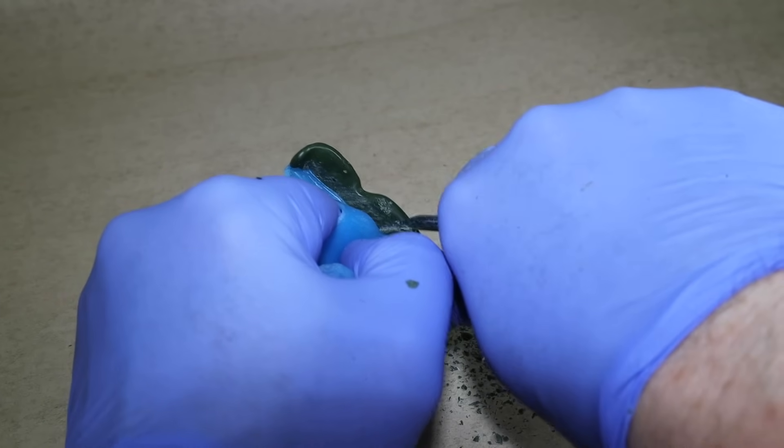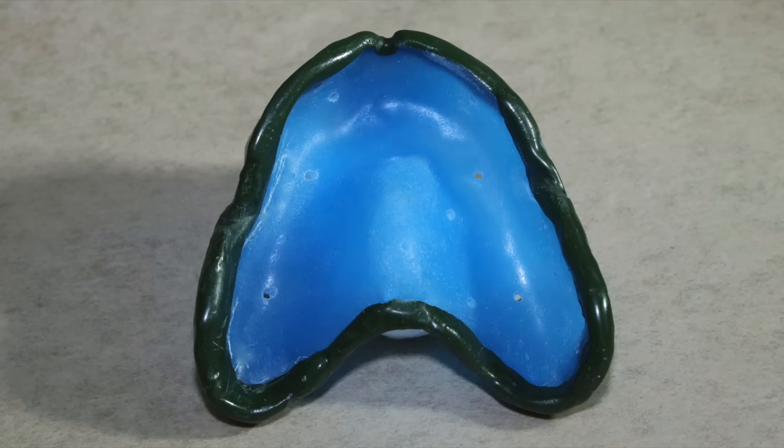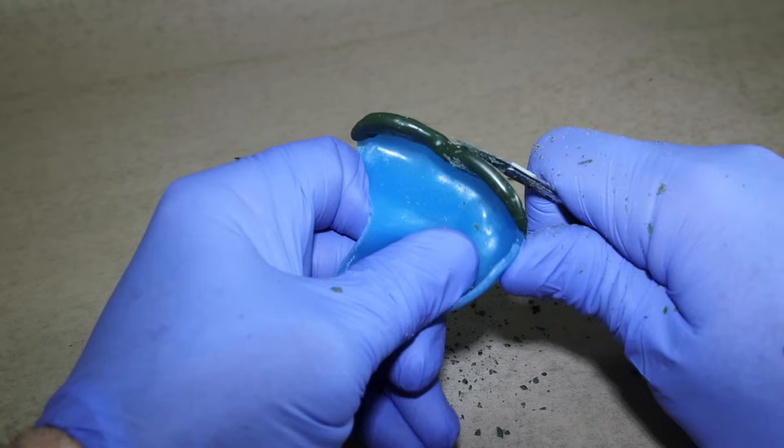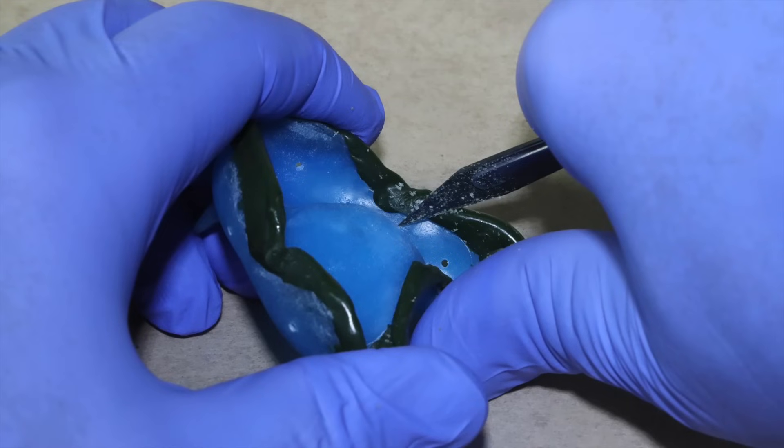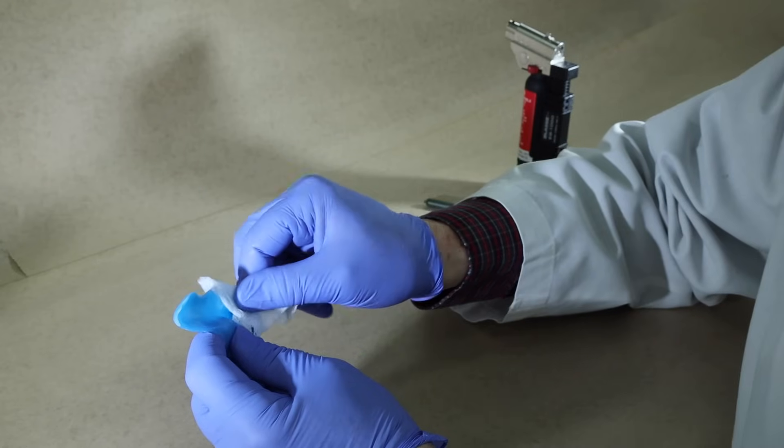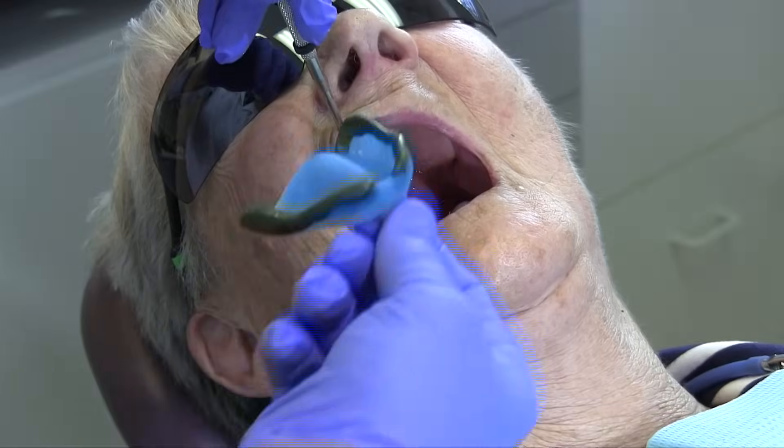Before moving on to another portion of the tray, trim any excess compound that has overlapped the internal surface of the tray, or any external material that is thicker than 4-5 mm. Blend the compound with the tray internally and externally so there are no ledges. Clean and dry the tray before adding additional compound. Repeat until the periphery is completed.